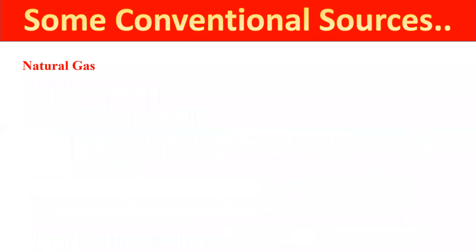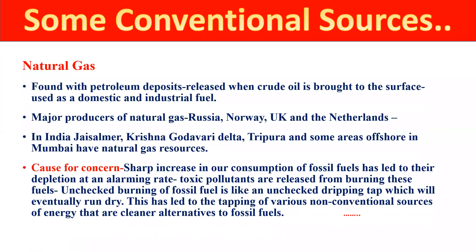Now let's think about natural gas. Natural gas is found with petroleum deposits. When crude oil is brought to the Earth's surface, the first product released is natural gas. Major producing areas of natural gas in the world are Russia, Norway, UK, and the Netherlands.